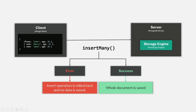So while inserting, updating, or deleting multiple documents, if something goes wrong, the already fully inserted, updated, or deleted documents will not be rolled back. Only those documents which were partially inserted, updated, or deleted will be rolled back. The reason is that atomicity is applied on a per-document level, not on the overall data involved in the transaction. This is what we mean when we say atomicity is applied on a per-document level in MongoDB.